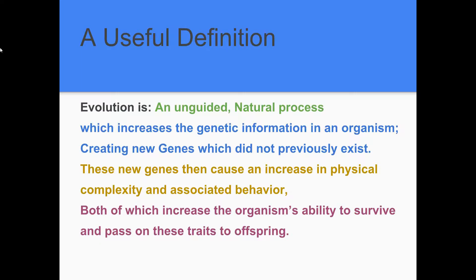To help the world, I have created the world's first useful and clear definition of Darwinian evolution, and it goes like this: Evolution is an unguided natural process which increases the genetic information in an organism, creating new genes which did not previously exist. These new genes then cause an increase in physical complexity and associated behavior, both of which increase the organism's ability to survive and pass on these traits to offspring. So clear. So useful. You're welcome, science.